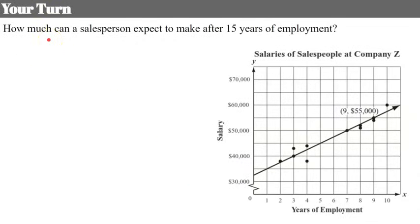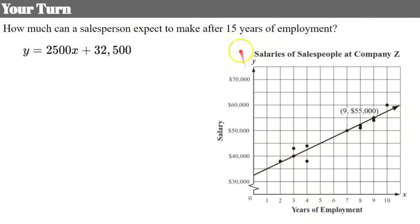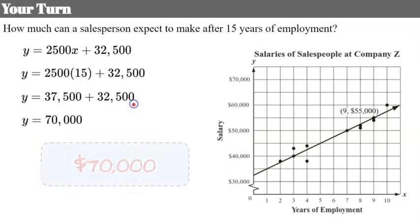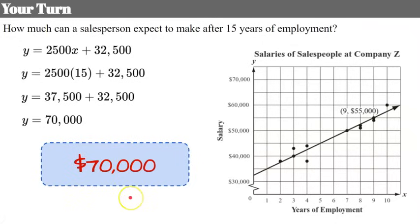Now use this to predict how much a salesperson can expect to make after 15 years of employment. Using our line of fit equation, we replace X with 15: 2,500 times 15 is 37,500, plus 32,500 gives us 70,000. So we can expect that after 15 years of employment, a person at Company Z would be making $70,000 a year.